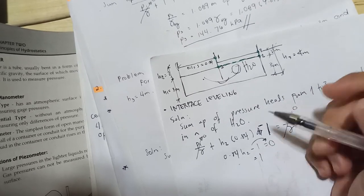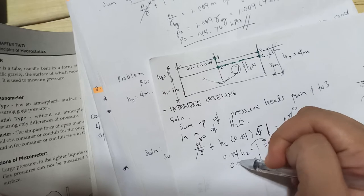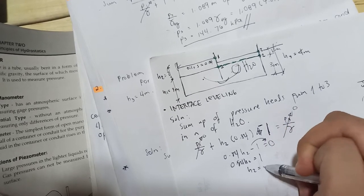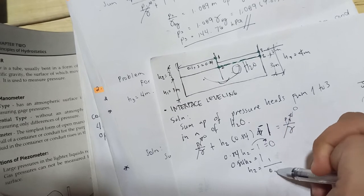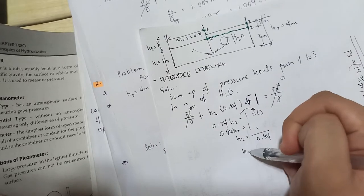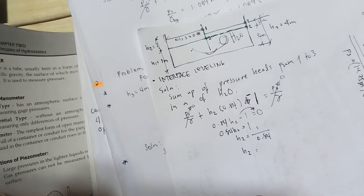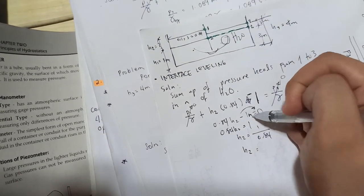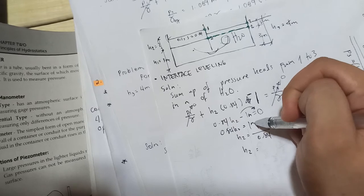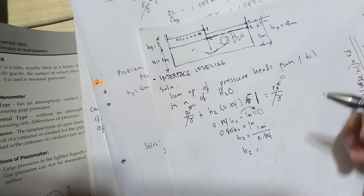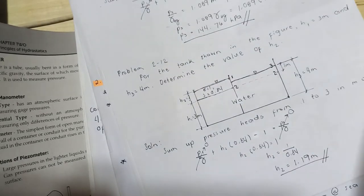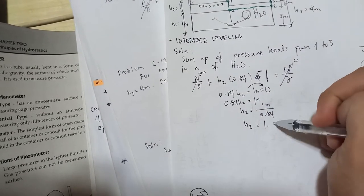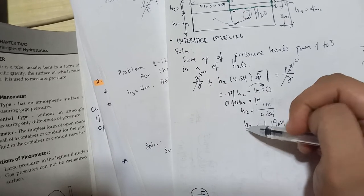So 0.84 h2 minus 1 equals 0. Transposing: 0.84 h2 equals 1, so h2 equals 1 over 0.84. Therefore h2 is 1.19 meters.